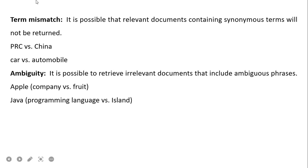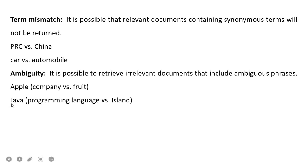For example, 'People's Republic of China' versus 'China' — if a document contains 'PRC' but the query uses 'China', the document may not be retrieved. Similarly, 'car' versus 'automobile'. Ambiguity may also cause irrelevant documents to be retrieved — for example, 'apple' could refer to the company or the fruit. Similarly, 'Java' could be a programming language or an island.